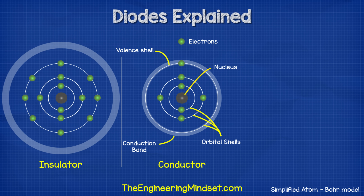With an insulator the outermost shell is packed — there's very little to no room for an electron to join. The nucleus has a tight grip on the electrons and the conduction band is far away, so the electrons can't reach it to escape. Therefore electricity cannot flow through this material.